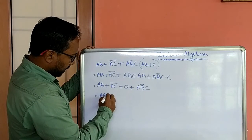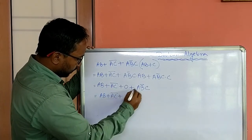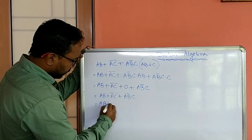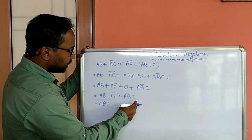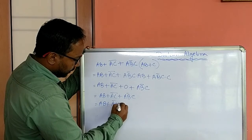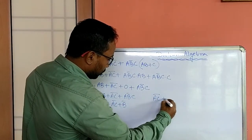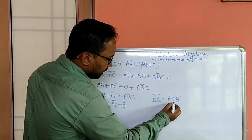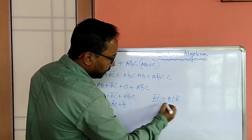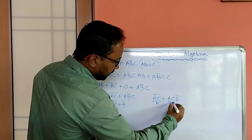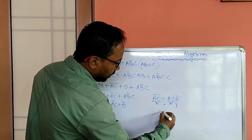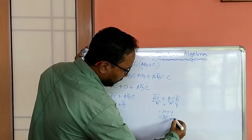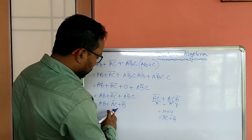Then ab plus ac whole not plus ab not c. Now from these two we are getting ac not plus b not according to the distributive law. How we are getting that? This is ac not. And ab not c means ac b not. So if this is x, then this is x not, and this is y. So x plus x not y equals x plus y. So at the place of x, actual value is ac not, and y's value is b not. So ac not plus b not.